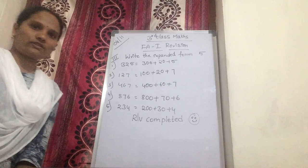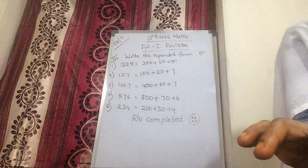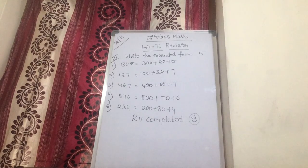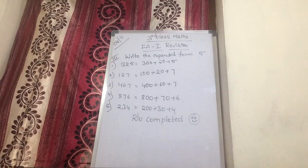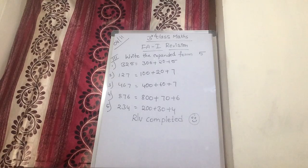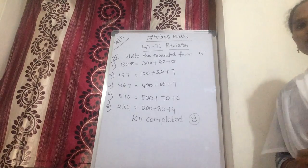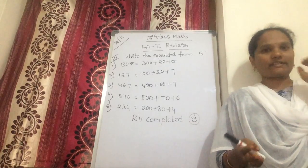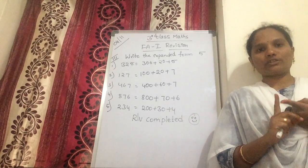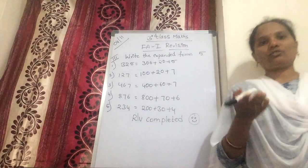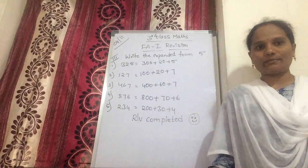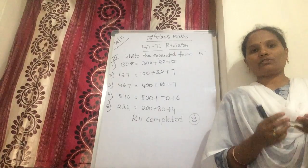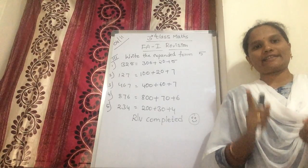Copy your classwork. Today's homework is: whatever you write in revision — first bit, second bit, and third bit — post all three bits in our group. I can't verify whether you are writing correctly or not, that's why you are posting these three bits. You write and post it — first bit, second bit, and third bit. Okay?